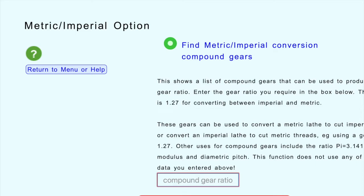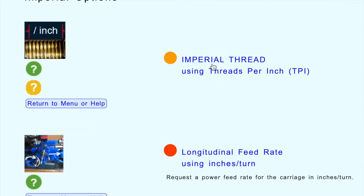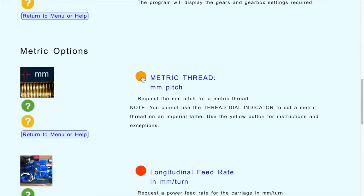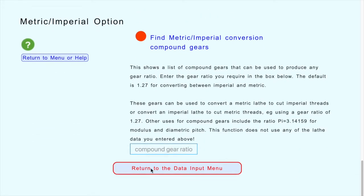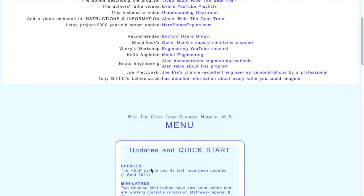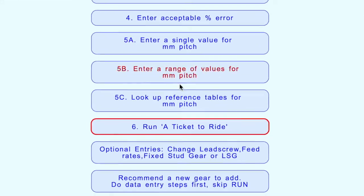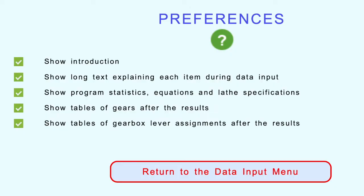With the metric-imperial option you just put in the gear ratio you want and it shows what pairs of gears can be used. That's a little added extra. We chose an imperial lathe - let's choose a metric thread and see if we can cut it without a gearbox. It is a little demanding but we'll see. We find ourselves back at the menu system; let's go to preferences before we do anything else.